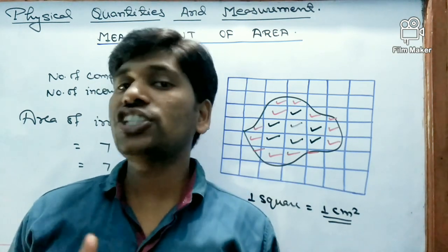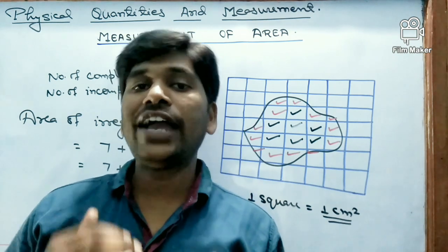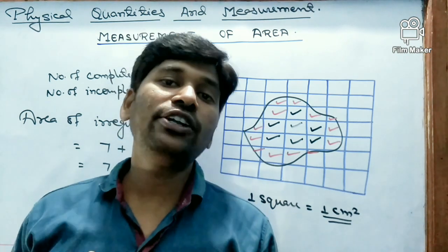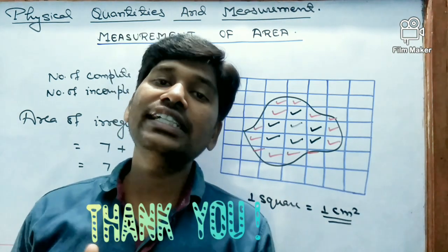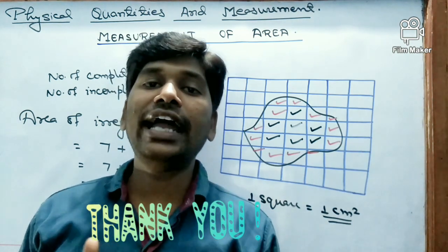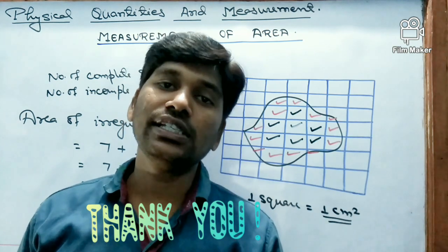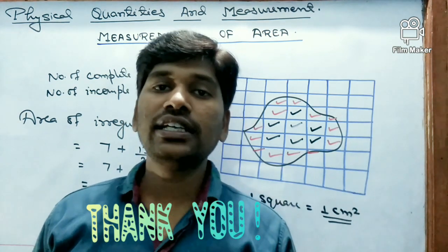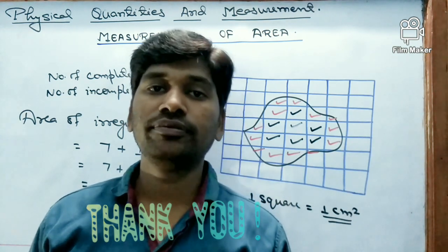This is the method to calculate the area of an irregular shape body. That covers volume and area. In the next video I will explain the measurement of density and speed. Thank you students for watching.